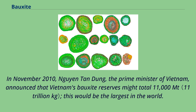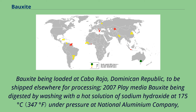In November 2010, when Nguyen Tan Dung, the Prime Minister of Vietnam, announced that Vietnam's bauxite reserves might total 11,000 million tonnes, this would be the largest in the world. Bauxite being loaded at Cabo Rojo, Dominican Republic, to be shipped elsewhere for processing.